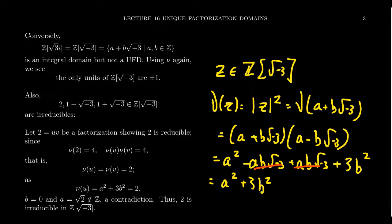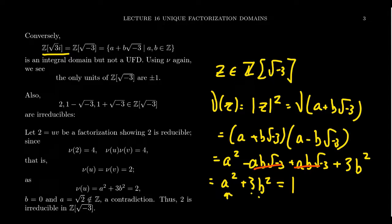A similar argument applies: the units of this ring are elements whose norm equals 1. To get a² + 3b² = 1, we can use ±1 for a and 0 for b, giving 1. If we try b ≠ 0, then 3b² ≥ 3, which is already too big. So this ring has exactly two units: +1 and −1.